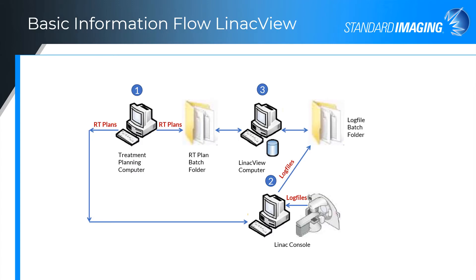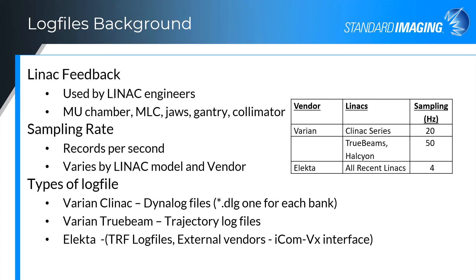Here is the basic information flow for LINAC View. Everything begins with the RT plan, which is exported from the TPS data and machine data via RT records, and also to the LINAC console. Once the plan is delivered, the log files are synced for automatic retrieval by LINAC View. For any plan files already imported, LINAC View automatically matches log files to the plan and analyzes numerous parameters. The plan file has specific control points where one can determine how closely the planned versus delivered matches.